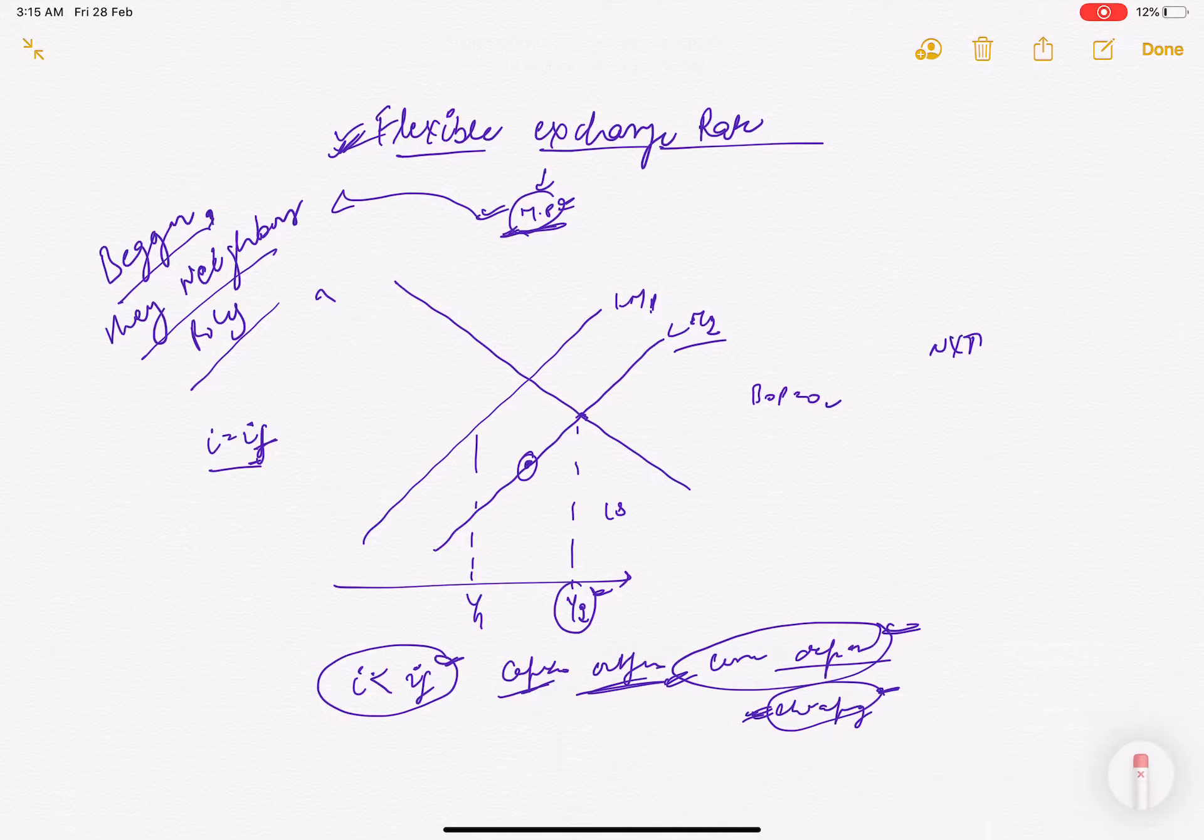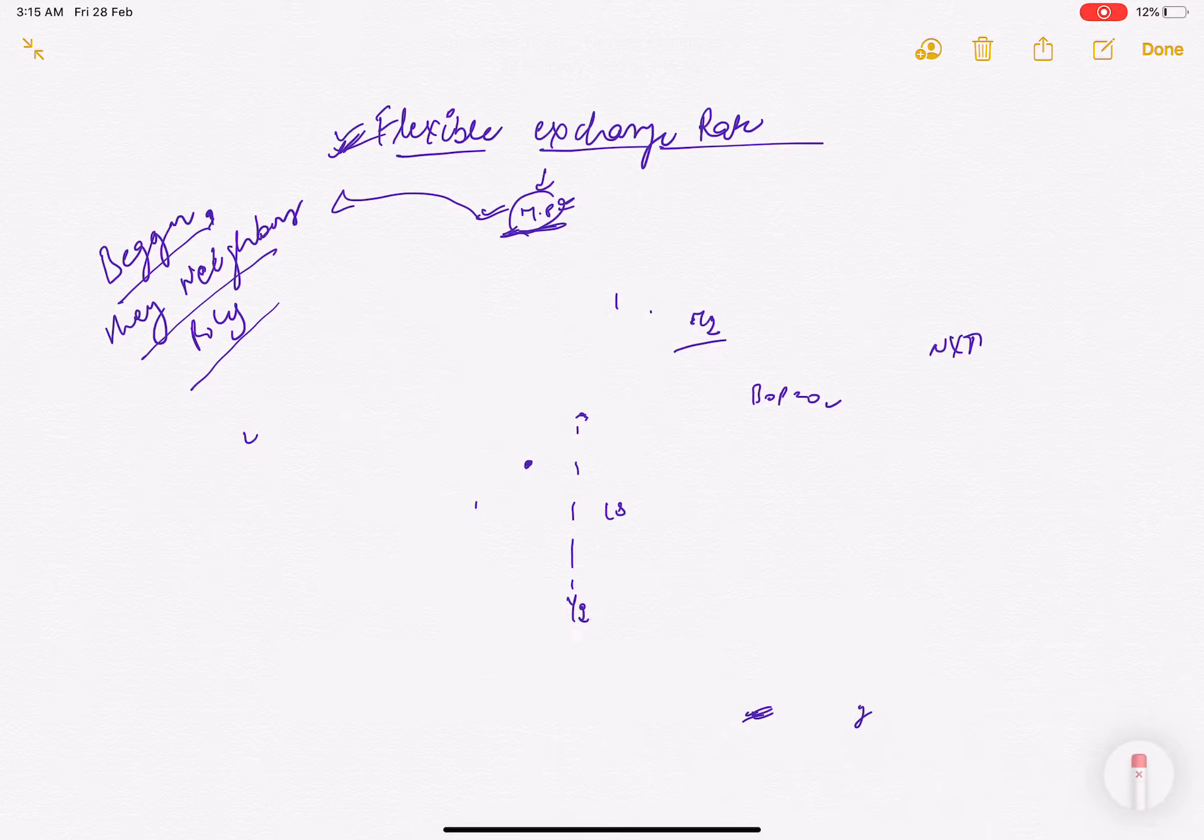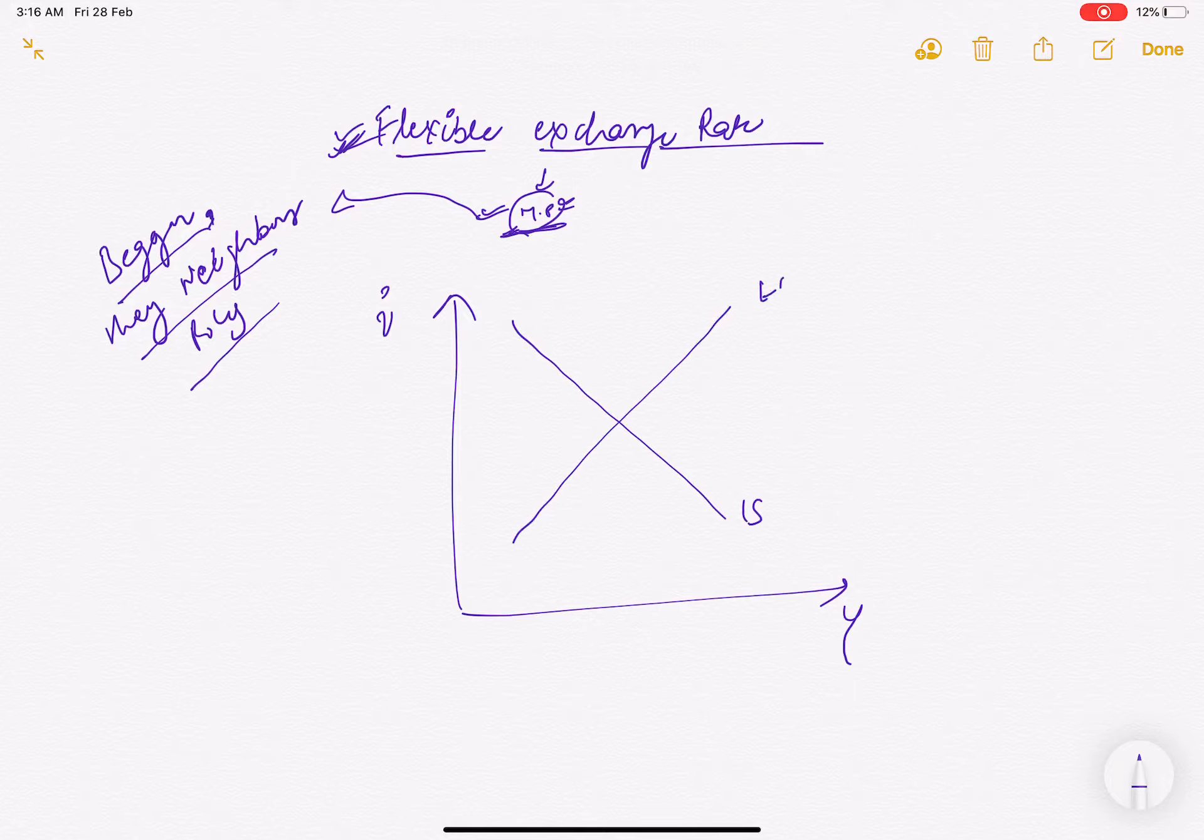Let me set up the diagram. On the Y-axis we have interest rate, and output on the X-axis. This is our IS curve, this is our LM curve, and this is the perfect mobility case where the BP line is horizontal at the world interest rate, where domestic interest rate equals foreign interest rate.